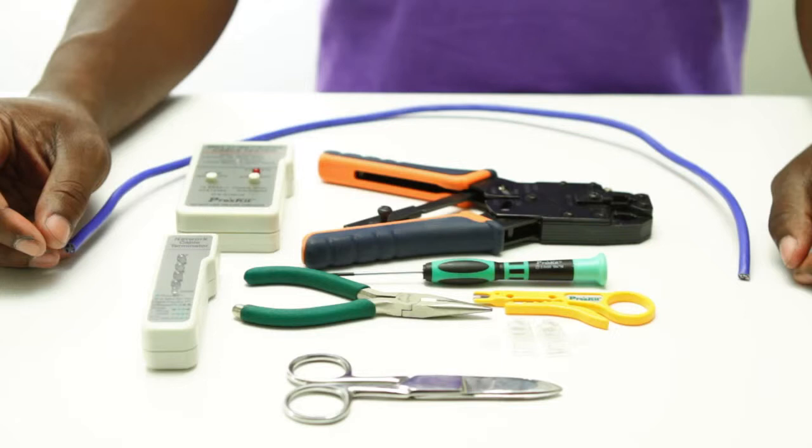For today's installation we are going to need CAT6 cable, our RJ45 connectors, technician scissors, rotary strip tool, screwdriver, pliers, crimp tool, and tester.